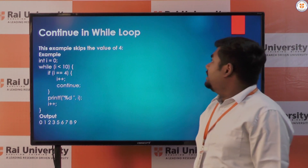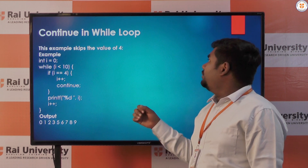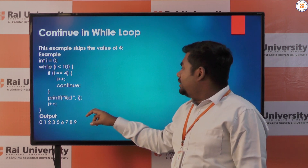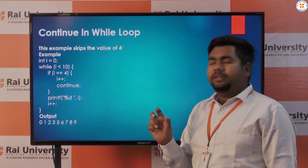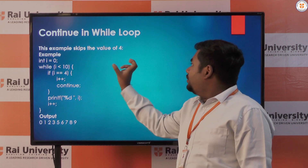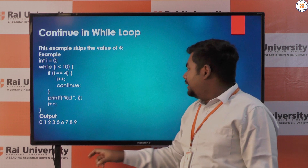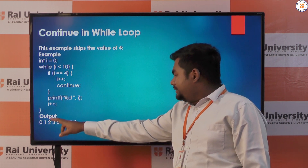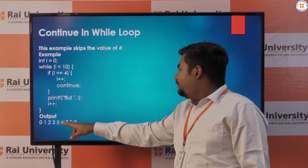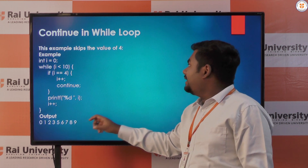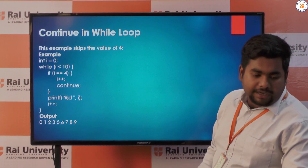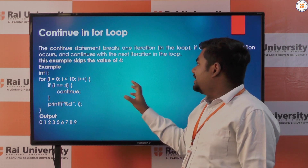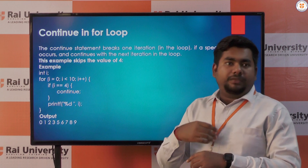Here is an example of continue statement in while loop. Using continue statement we just skip one part of the loop. Here we skip the value 4, so the output is 0, 1, 2, 3, then 4 is skipped, then 5, 6, 7, 8, 9. Similarly we can skip a value in a for loop also — the same process, just a different type.